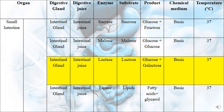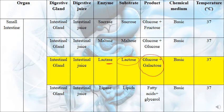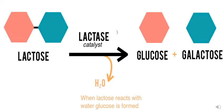Also at the level of the small intestine, the intestinal gland secretes intestinal juice containing the enzyme lactase. It's very simple: sucrase works on sucrose, maltase works on maltose, and lactase works on lactose. Lactose, when digested, gives glucose and galactose. The medium is basic with pH greater than 7, and the temperature is 37 degrees Celsius.